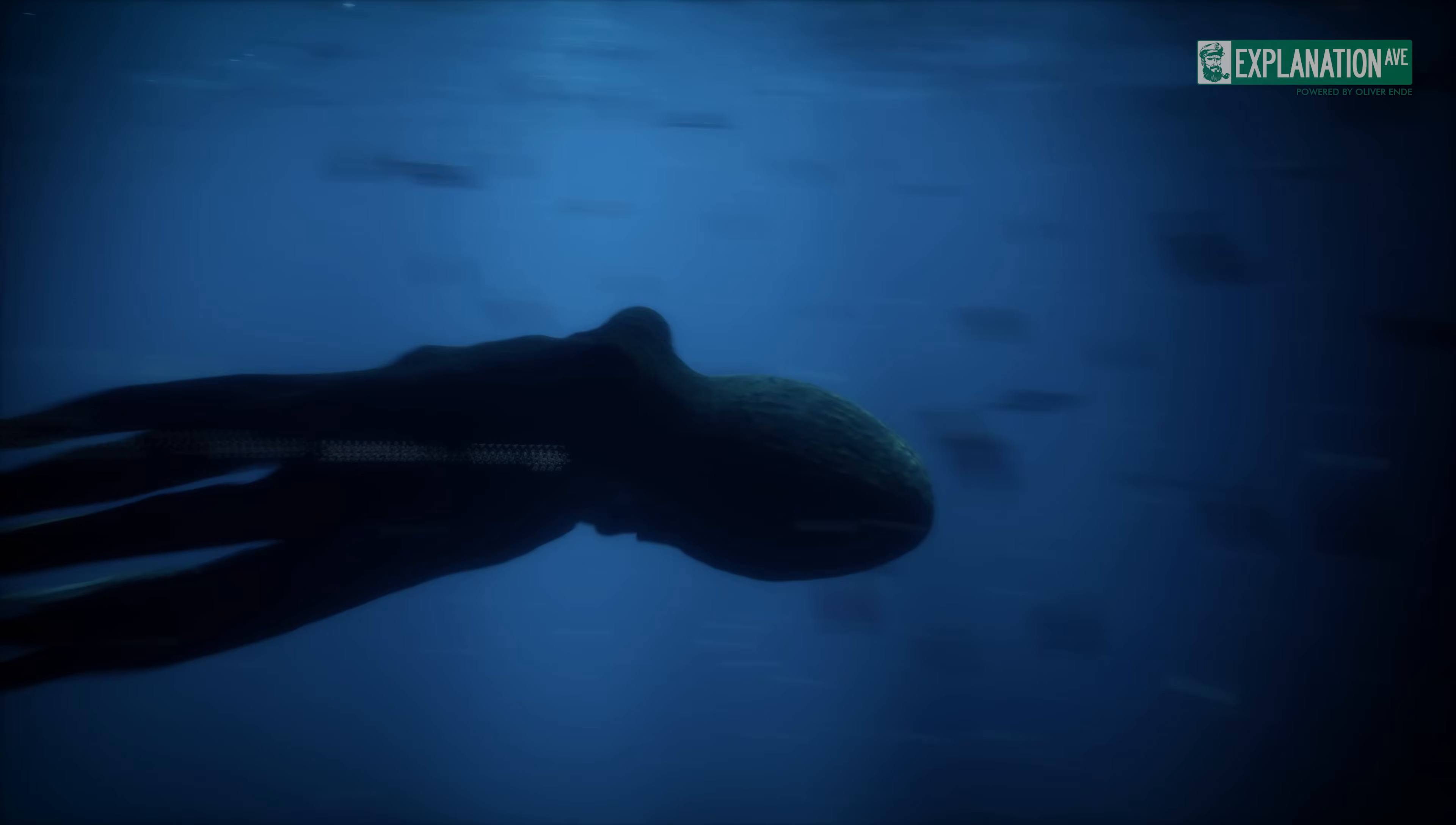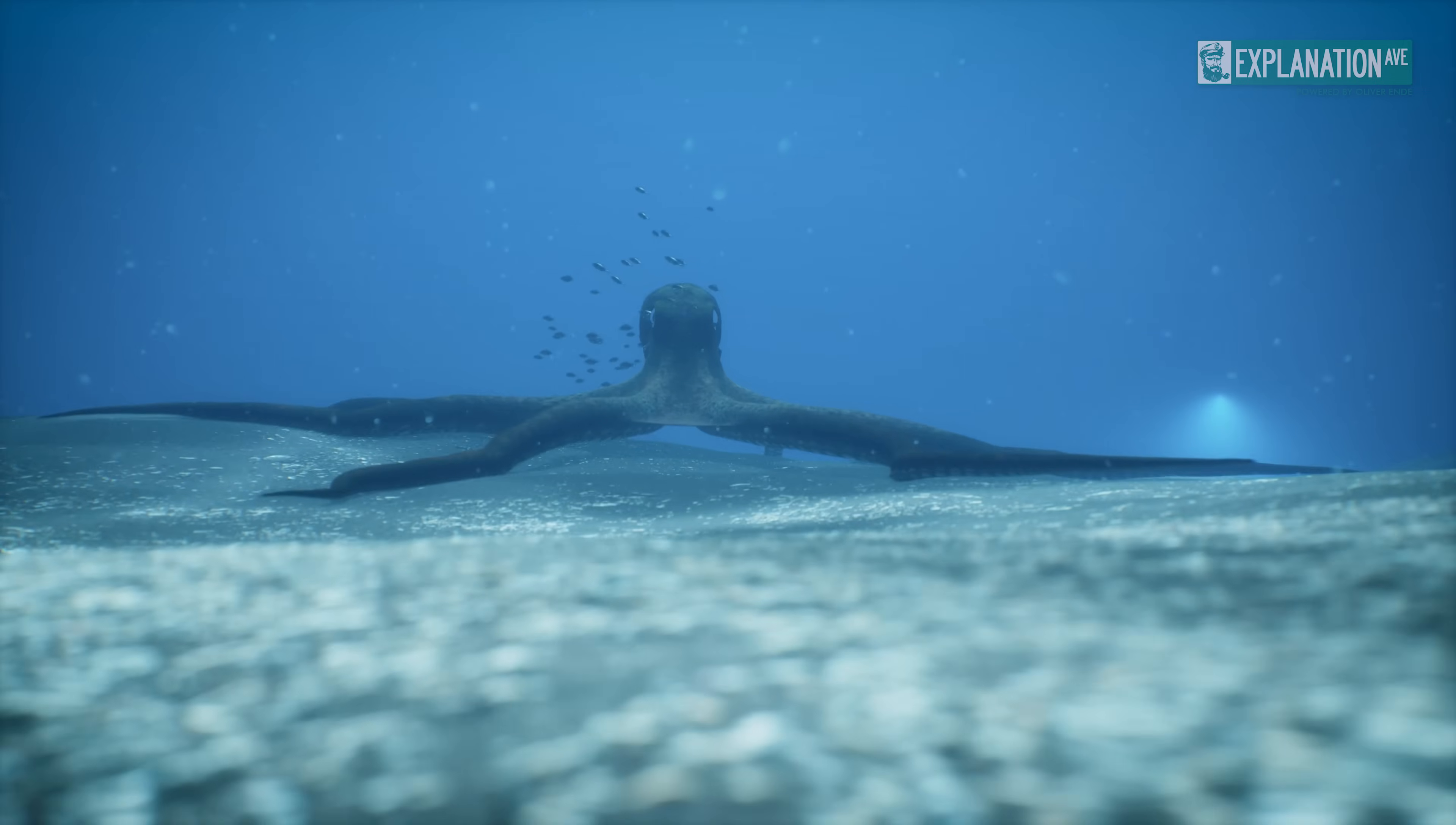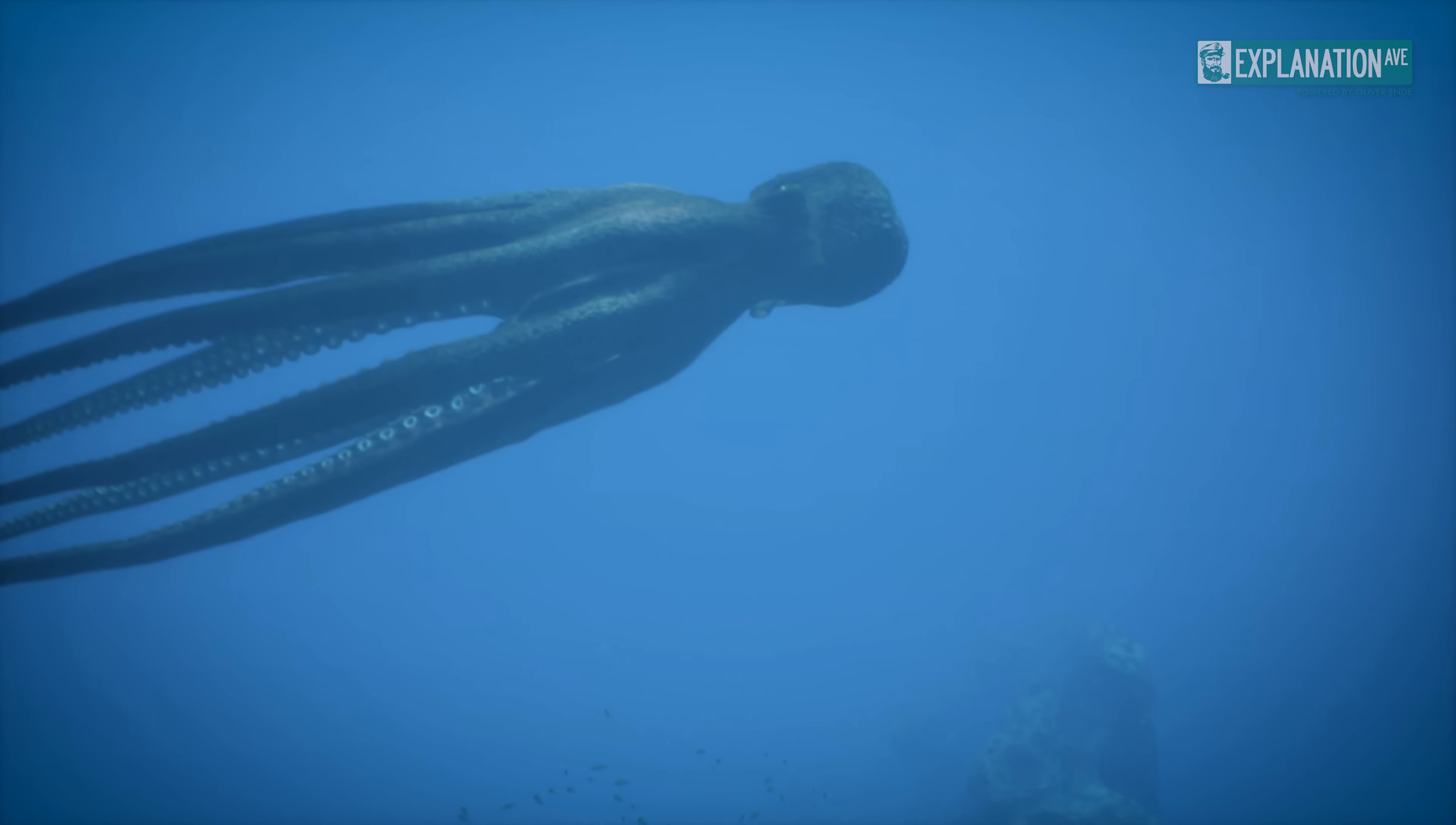In addition to jet propulsion, octopuses can move in a variety of other ways. One method is crawling, where they use their arms to pull themselves along the seabed. They can also swim by moving their bodies rhythmically.